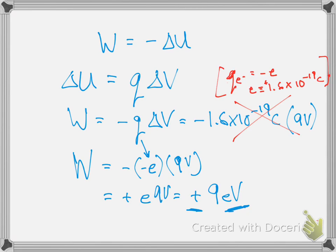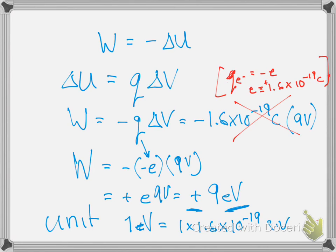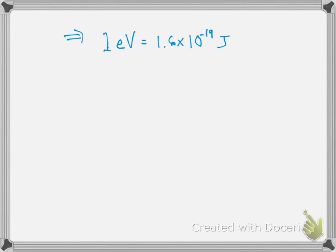eV is a unit of energy — not an MKS unit, but a convenient one. One eV is the fundamental charge e times one volt. Specifically, 1 eV equals 1.6 times 10 to the minus 19 coulombs times volts, which is 1.6 times 10 to the minus 19 joules. It's a very small amount of energy, convenient for atomic-scale energies and for charged objects equivalent to a few electrons or protons.